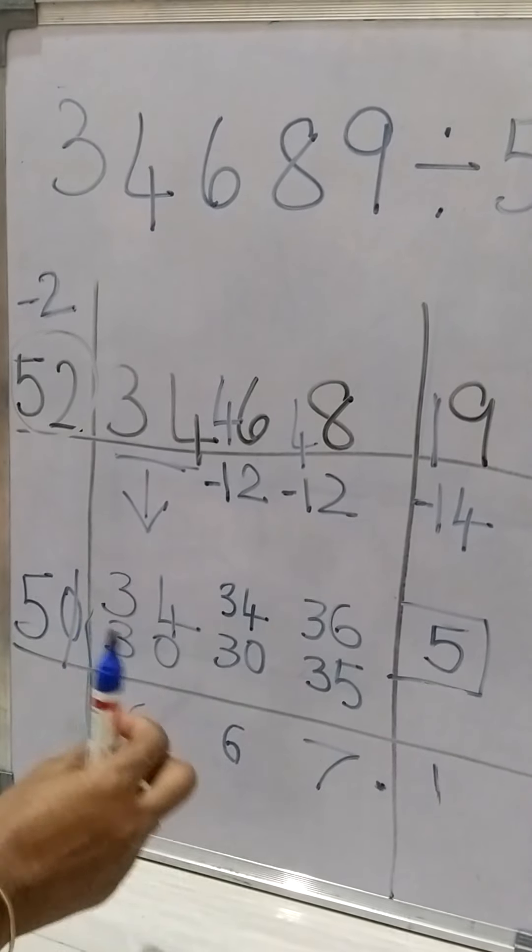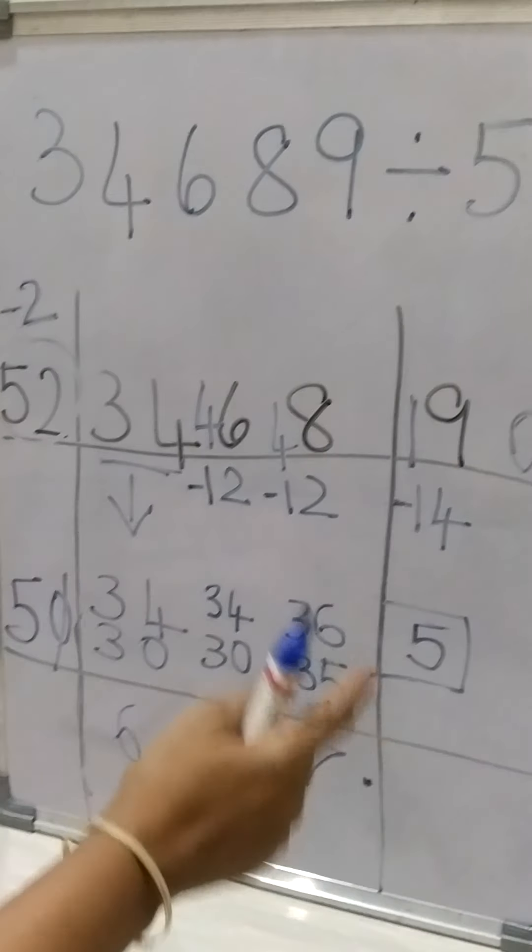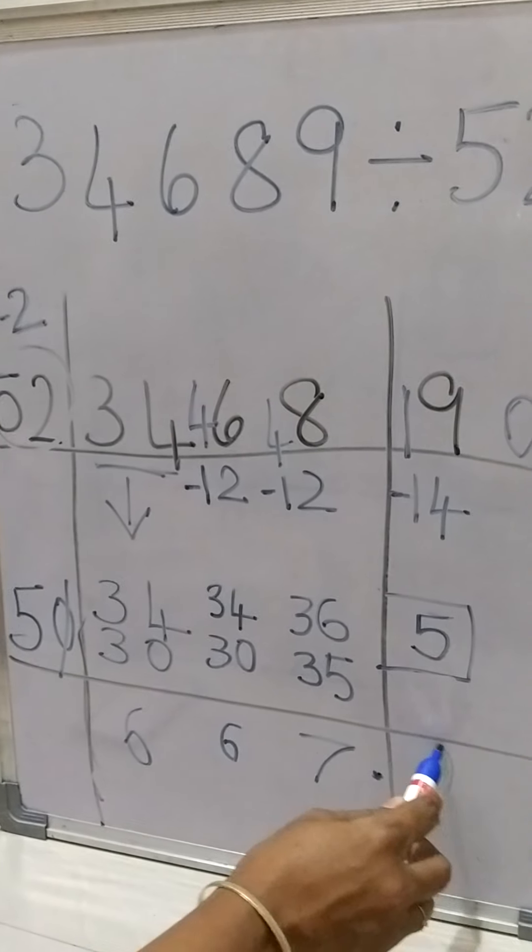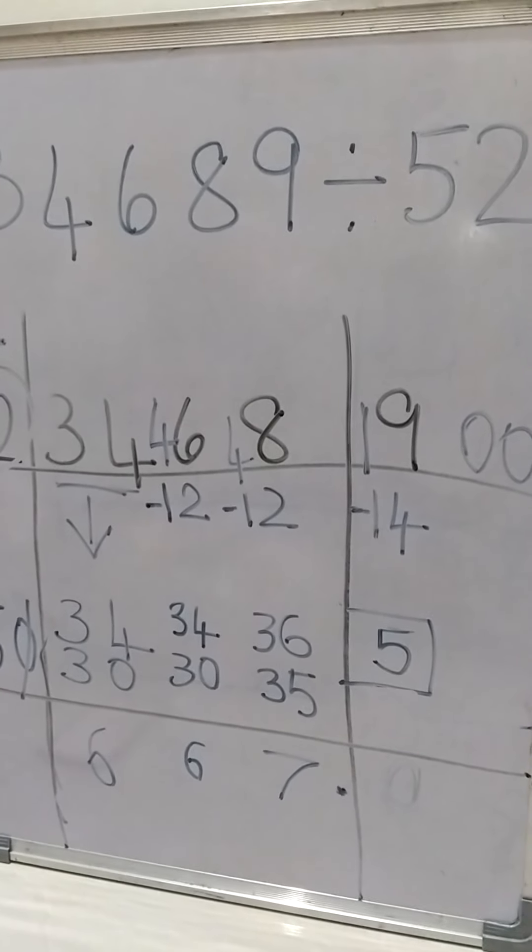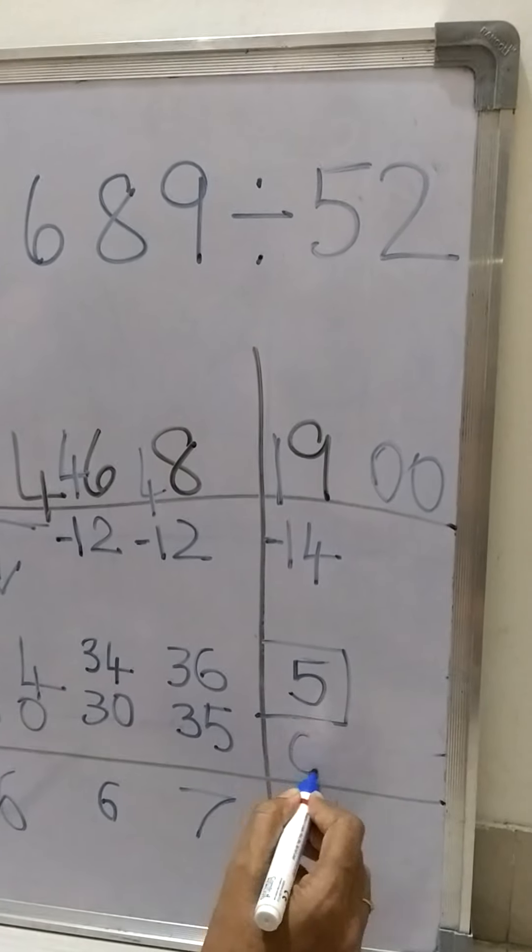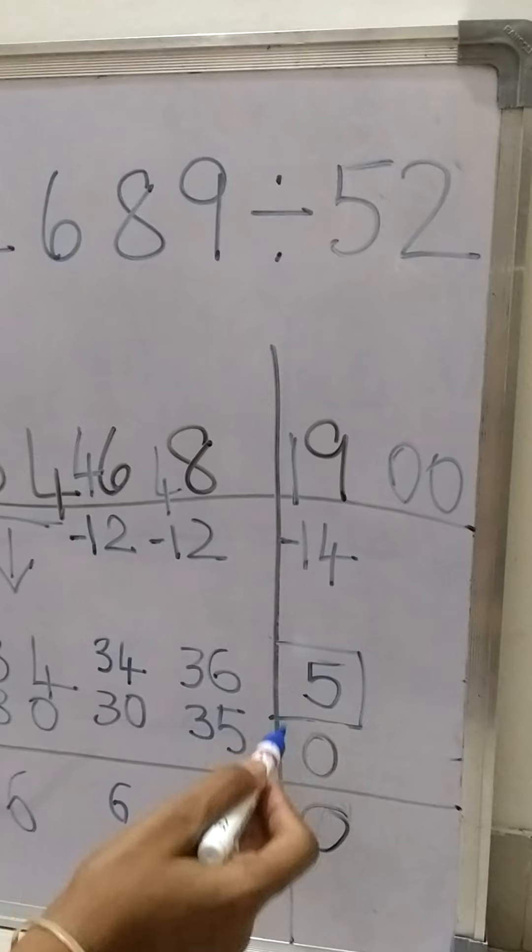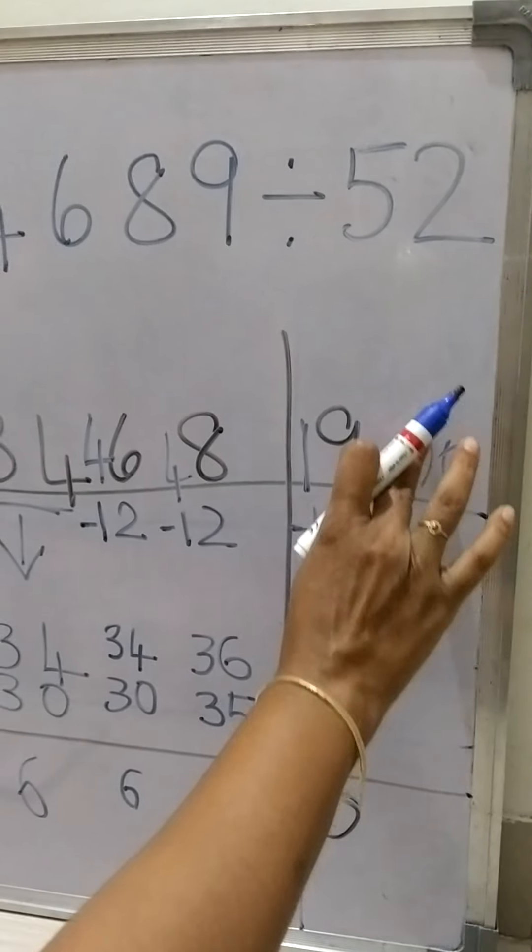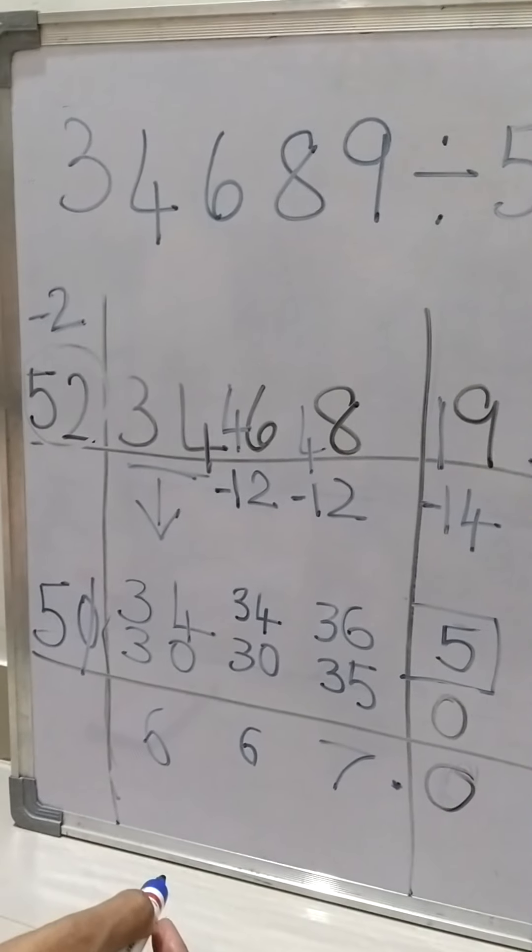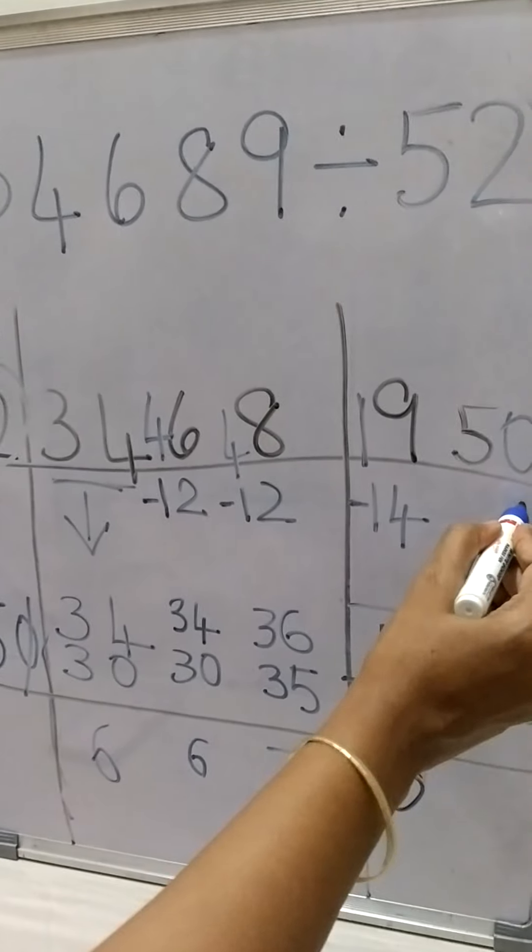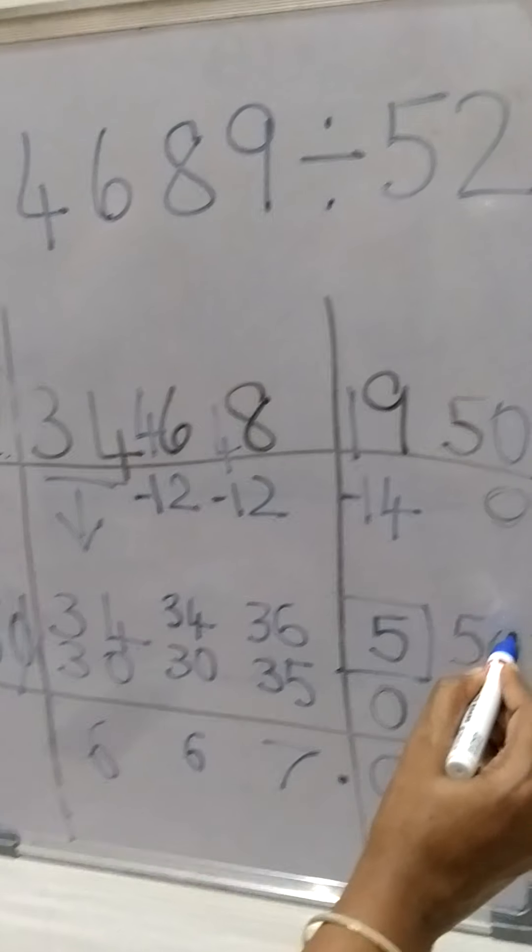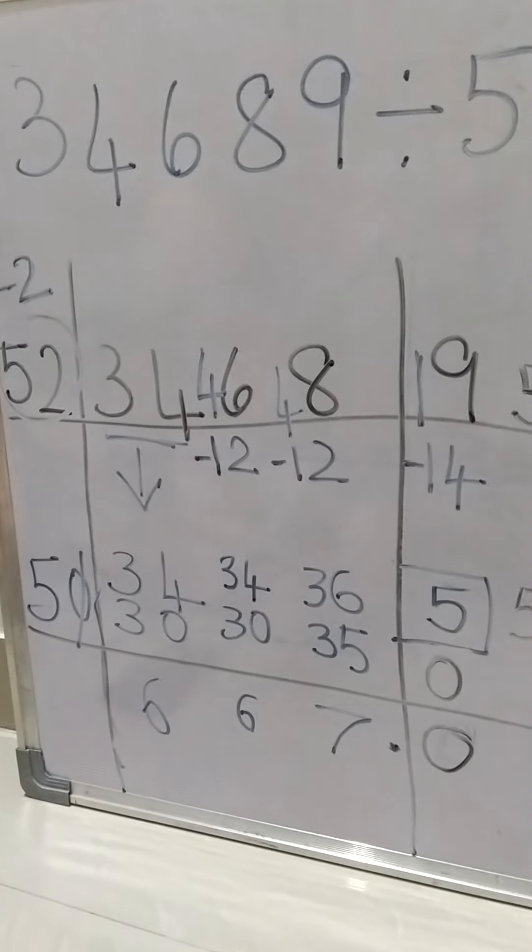Instead of taking 5 ones are 5, we'll take 5 zeros are 0. So 5 minus 0 will be 5, so our answer will be 50. So now we can do 5 zeros, 0 into 2, that is 0 minus. We'll get the same answer as 50.